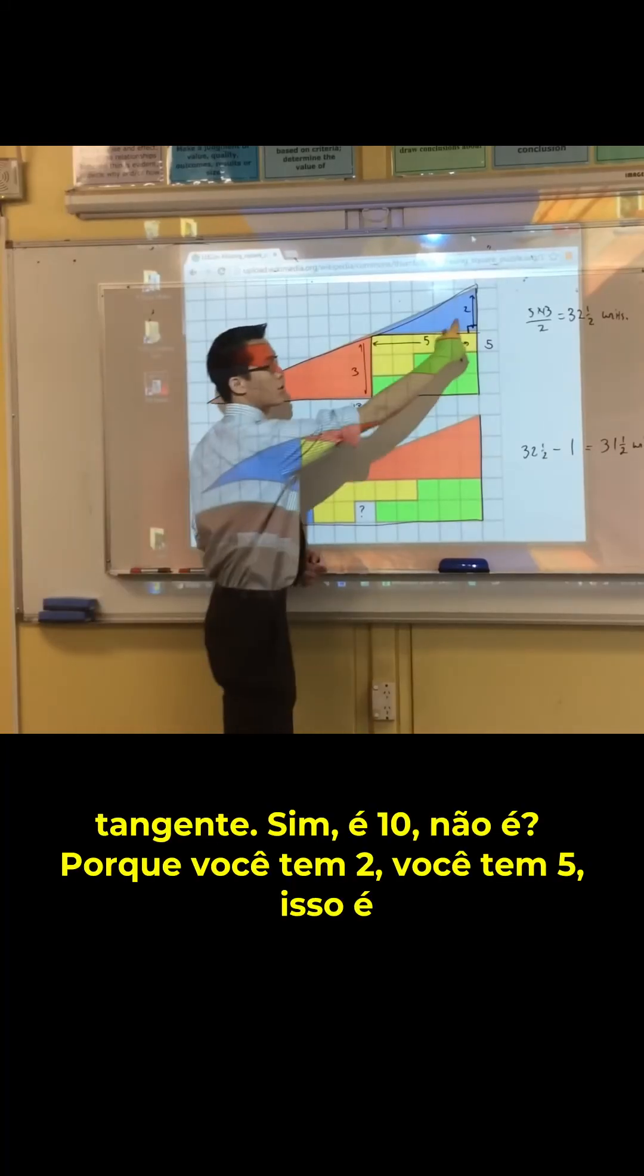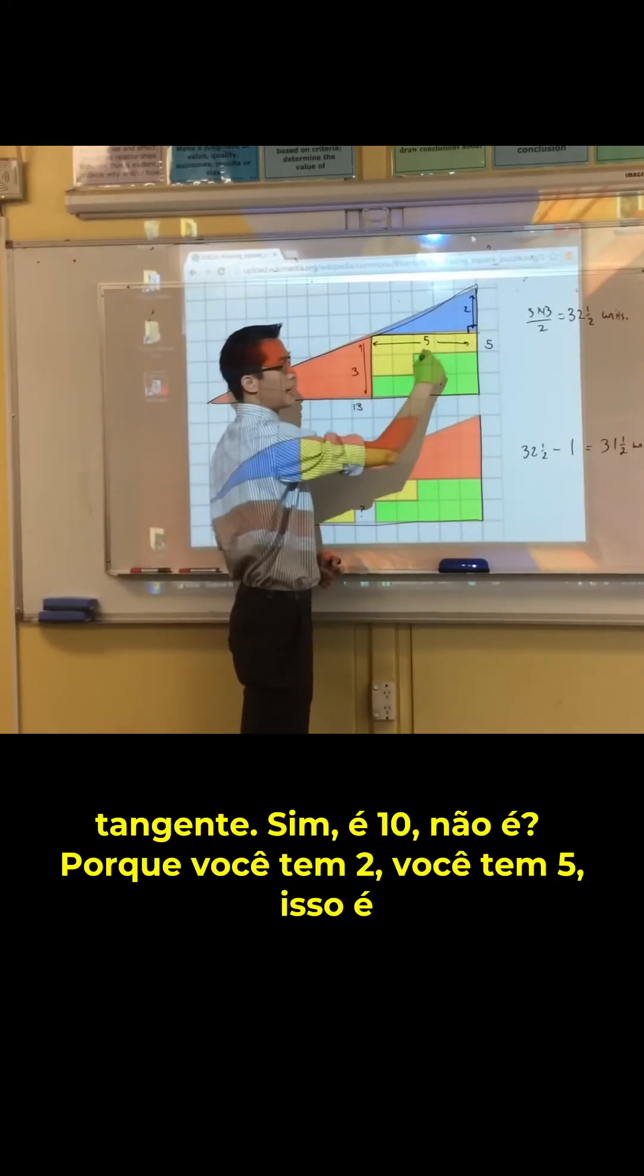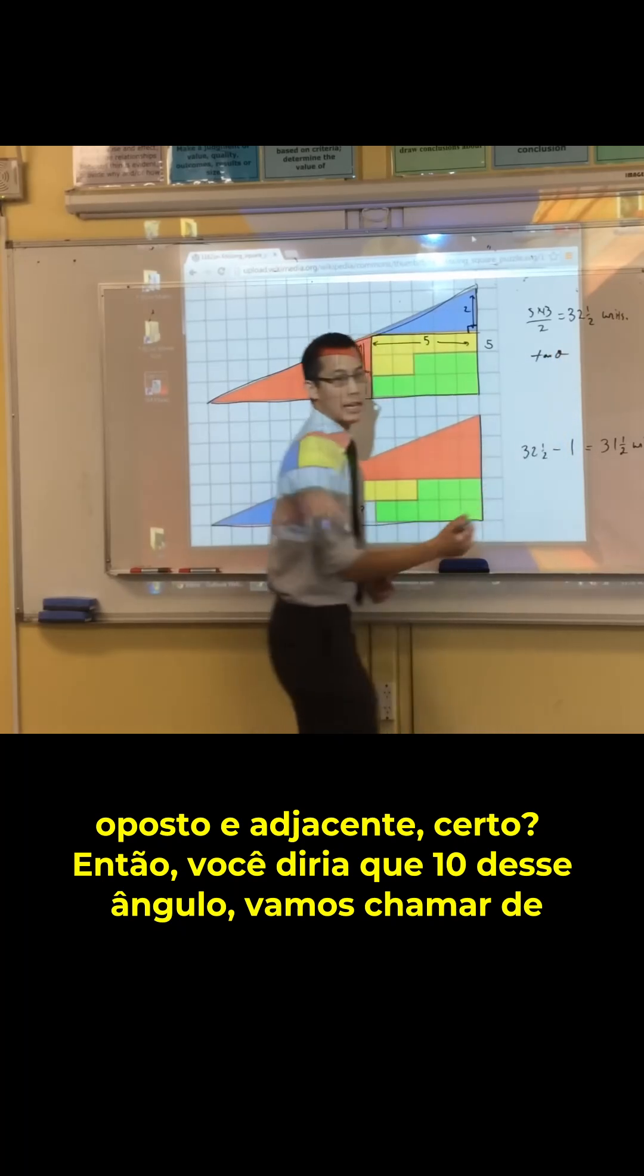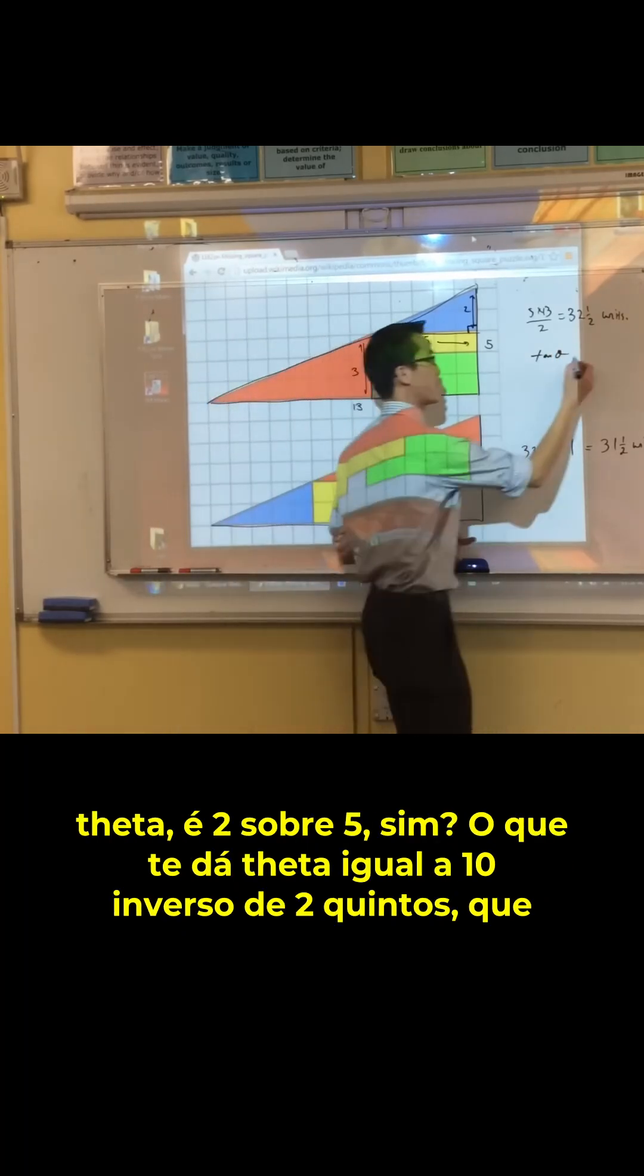Yeah, it is tan, wouldn't you? Because you've got 2, you've got 5, that's opposite and adjacent, right? So you would say tan of that angle, let's call it theta, is 2 over 5, yes?